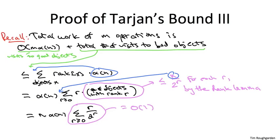Since we also have a per-operation bound of α(N) on the number of visits to good nodes, combining the work of the two cases, we get O(M + N · α(N)). The interesting case is when M is big-Omega of N; otherwise, you can just do this analysis separately for each tree in the data structure.